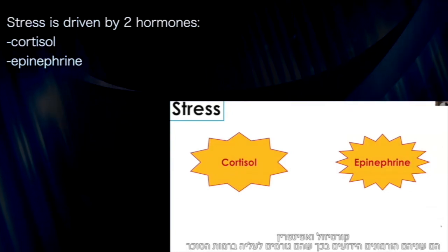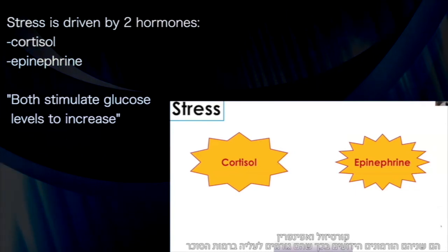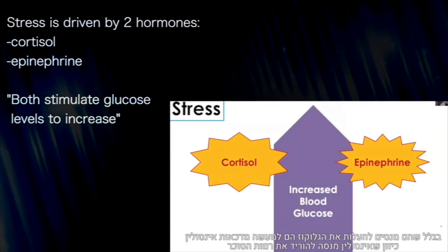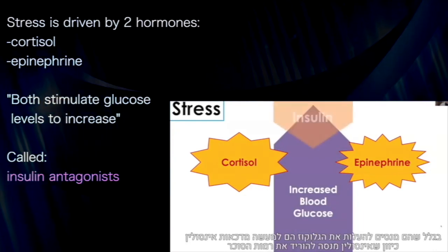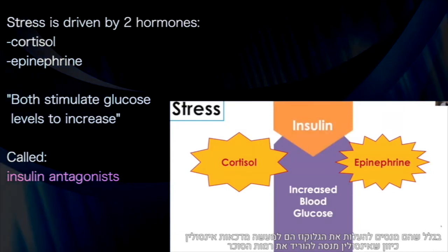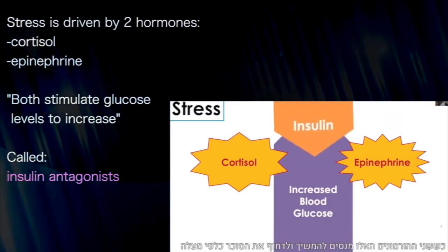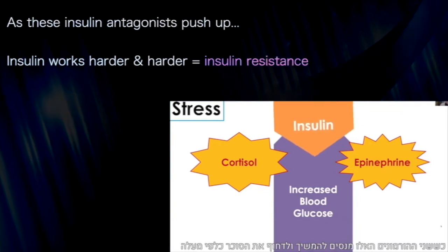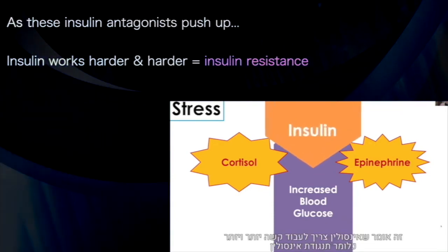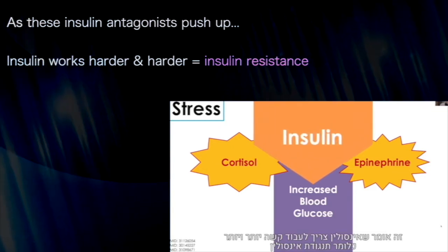Cortisol and epinephrine are both known to stimulate or increase blood glucose levels. Because they are pushing glucose up, they are accurately referred to as insulin antagonists, since insulin is trying to push it down. As these two stress hormones continue to provide upward pressure on glucose levels, it means insulin has to work harder and harder — insulin resistance, in other words.